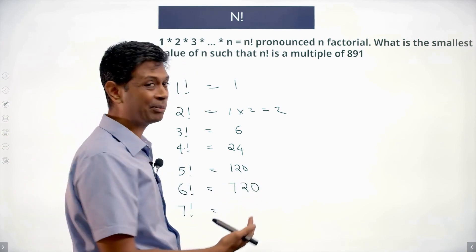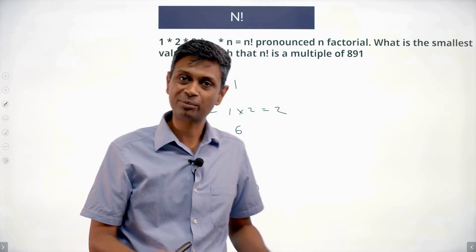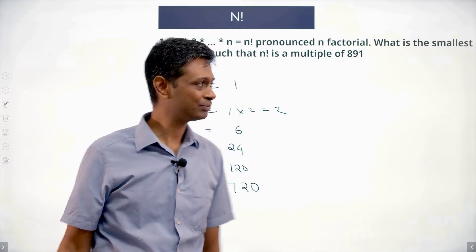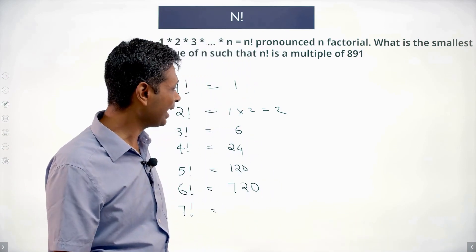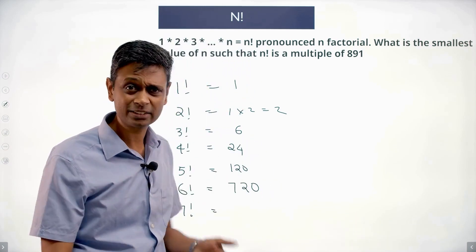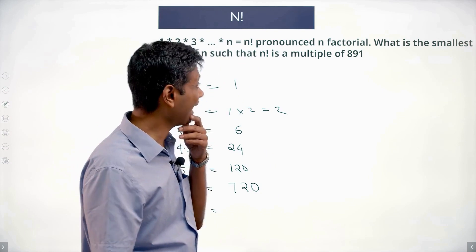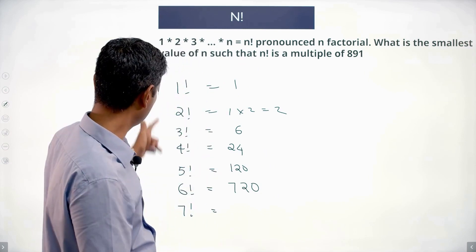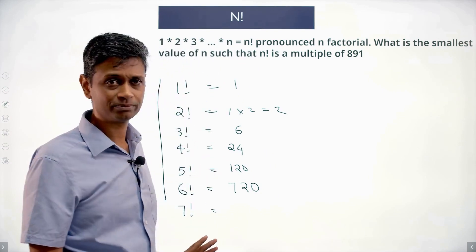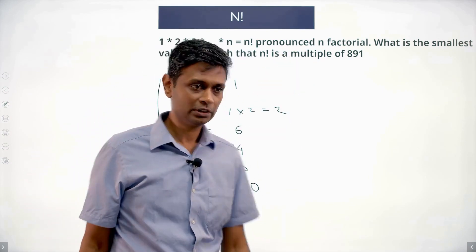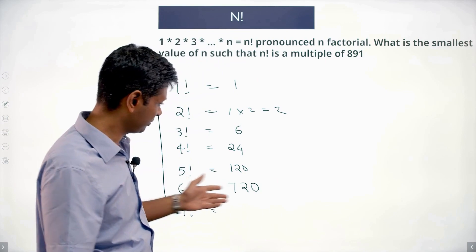For 7 factorial and beyond, the numbers are becoming larger and larger, so I can't verify this way. I can say none of these numbers listed so far is the answer, because 891 is more than 720.